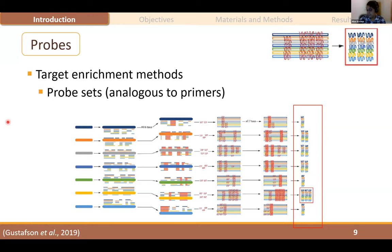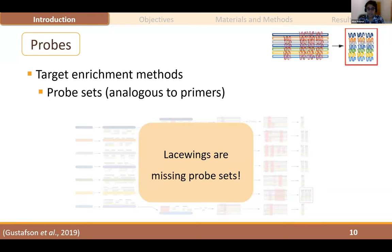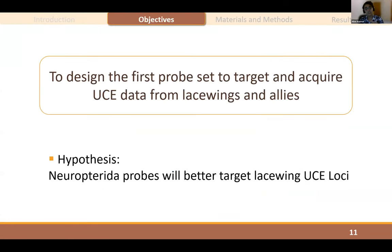Lacewings do not have probe sets designed for them, and if I want to reconstruct their phylogenetic trees using UCEs, I first need to design the probe set. My goal is to design a Neuropterida-specific probe to target UCEs, with the hypothesis that this will better target UCE loci and allow me to reconstruct the evolutionary history of Osmyloidea more precisely.